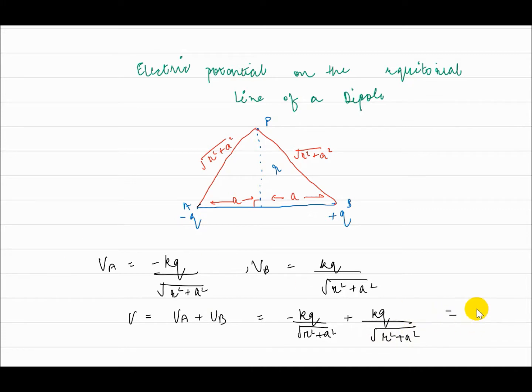So, the electric potential on the equatorial line of a dipole is equal to zero. Thank you and I will see you in the next video.